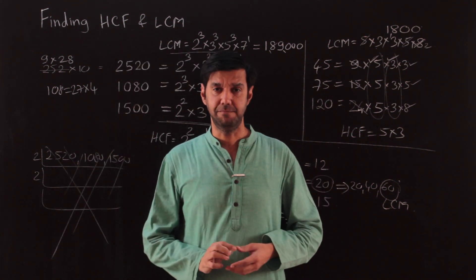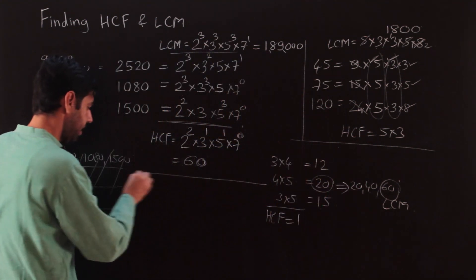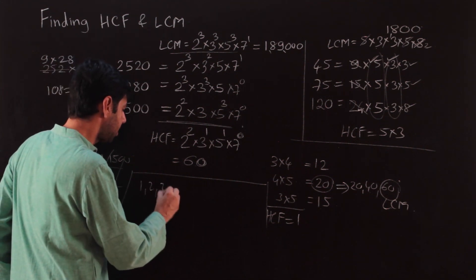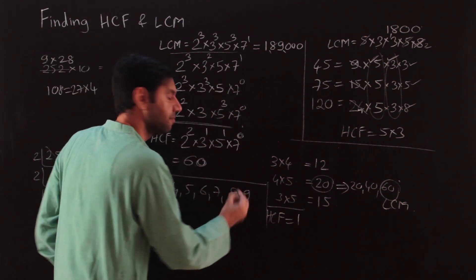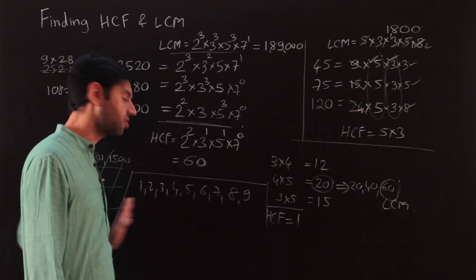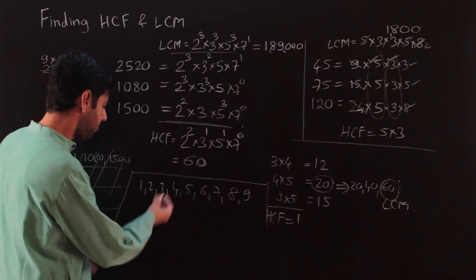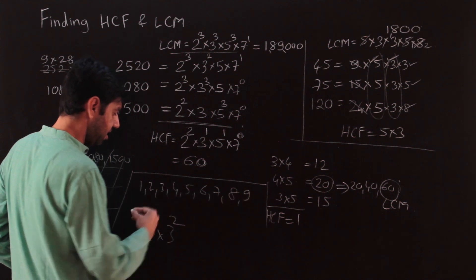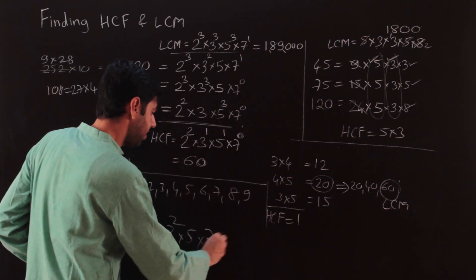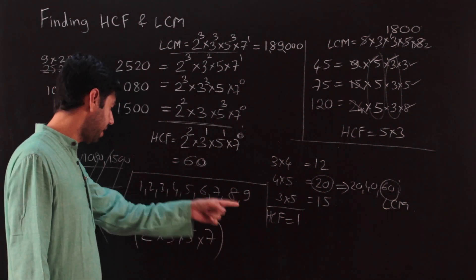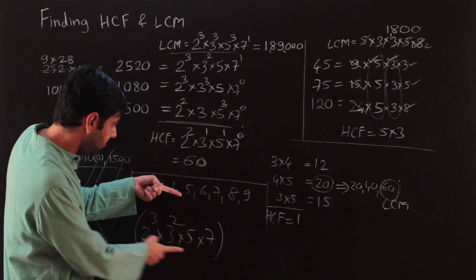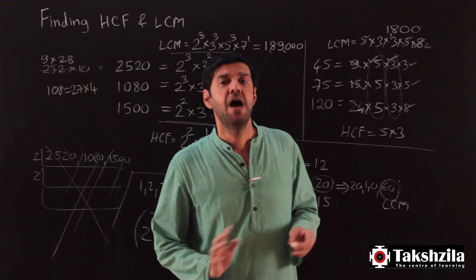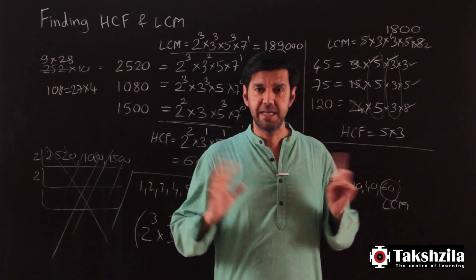Another case: LCM of 1, 2, 3, 4, 5, 6, 7, 8, and 9. The numbers are easy. Find the highest power of each prime: highest power of 2 is 2³ (from 8), highest power of 3 is 3² (from 9), there's one 5 and one 7. So LCM = 2³ × 3² × 5 × 7. Verify: divisible by 2 ✓, 3 ✓, 4 ✓, 5 ✓, 6 ✓, 7 ✓, 8 ✓, 9 ✓. That's your LCM.